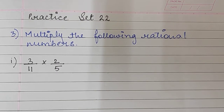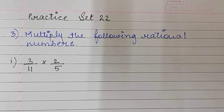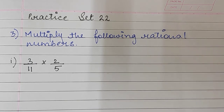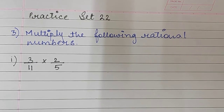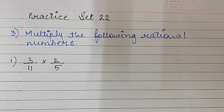Hello children, today we will continue with practice set 22 of chapter 5, operations on rational numbers. We will be doing sum number 3 of practice set 22. Sum numbers 1 and 2 have been done already in the previous video, where we learned how to add or subtract rational numbers. In this video we will learn how to multiply and divide rational numbers.